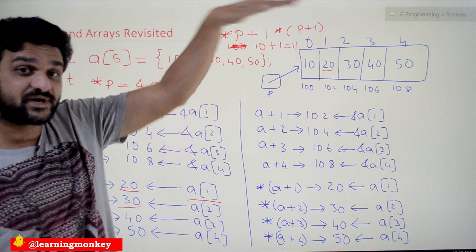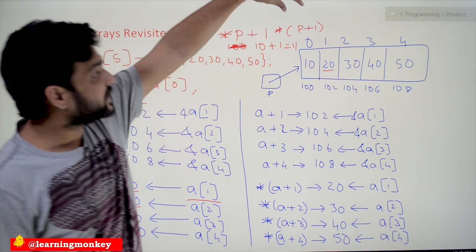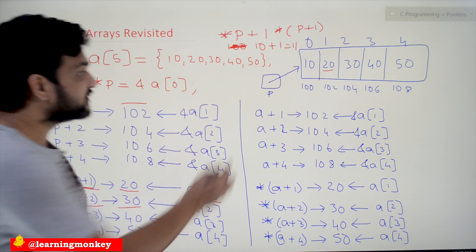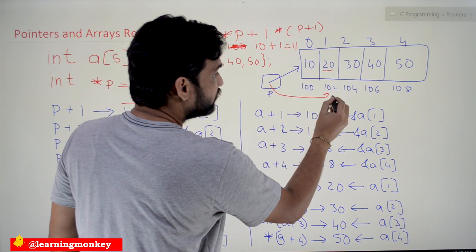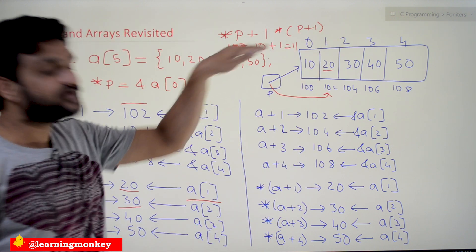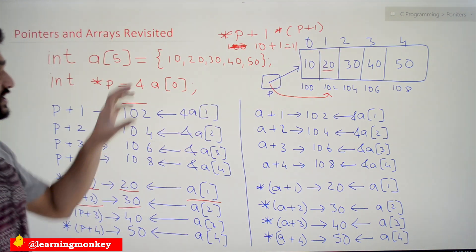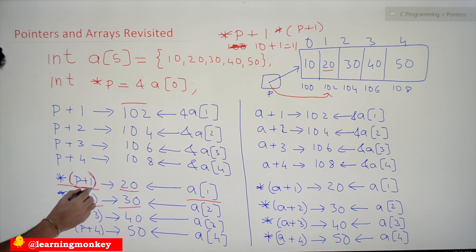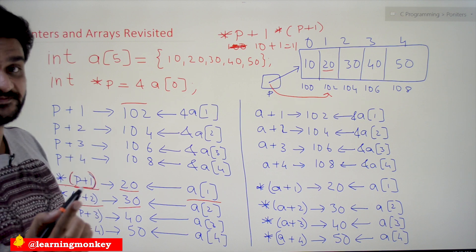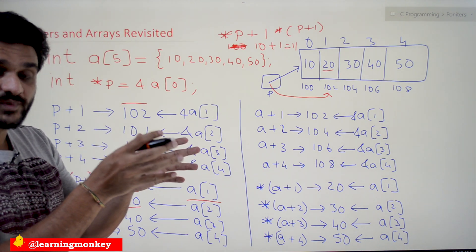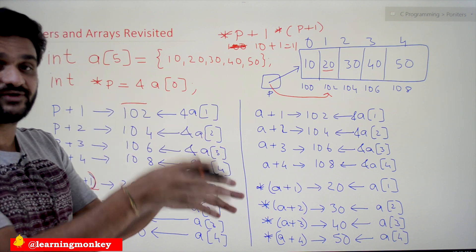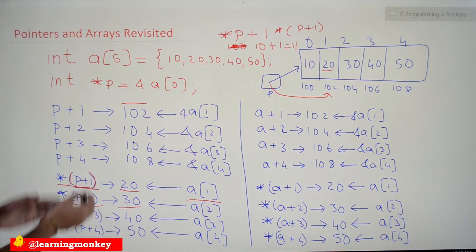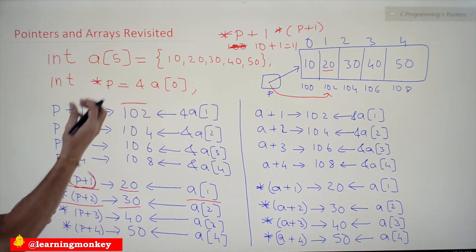To get the value stored at P+1, we must use parentheses because in the operator precedence table, parentheses have the highest precedence, and the star operator comes next. So *(P+1): the parenthesized part P+1 is evaluated first, giving address 102. Then the star dereferences that address, giving 20 as output. That is why we use parentheses — without them the meaning completely changes. Always think in terms of the operator precedence table.